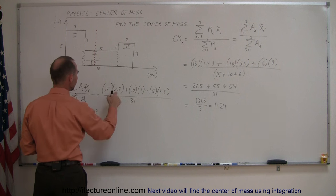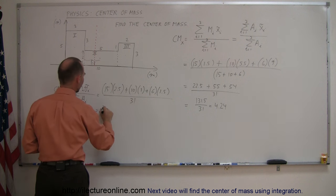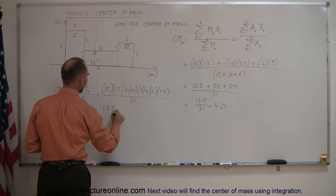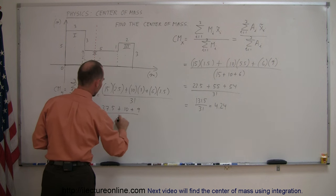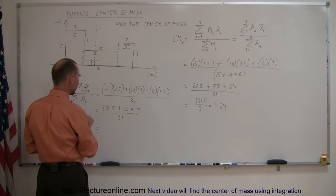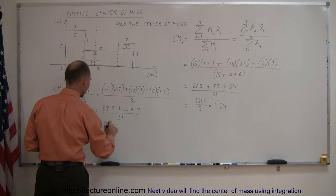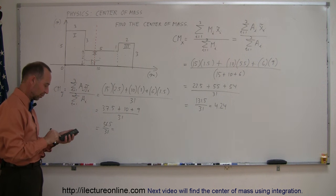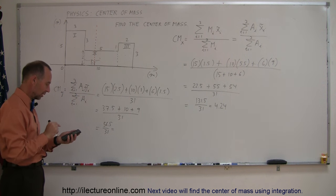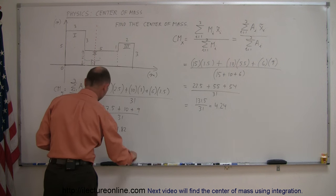Simplifying: 15 times 2.5 is 37.5, plus 10 times 1 is 10, plus 6 times 1.5 is 9, all divided by 31. Adding those together: 37.5 plus 10 plus 9 is 56.5, divided by 31. And 56.5 divided by 31 equals 1.82 meters in the y-direction.